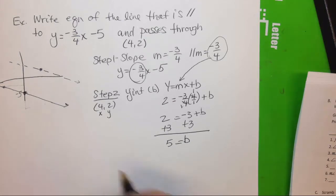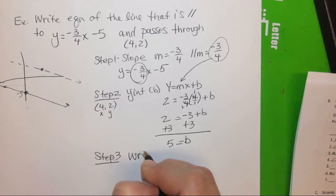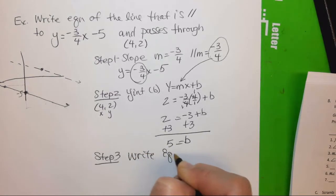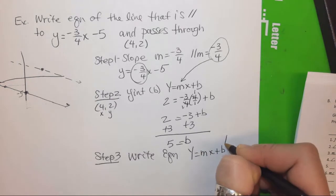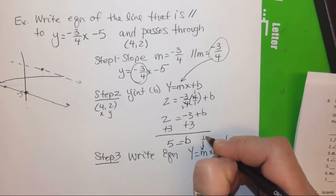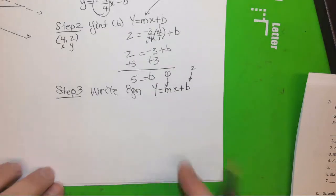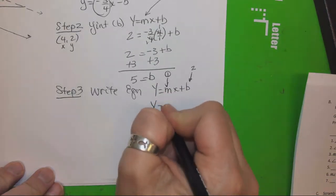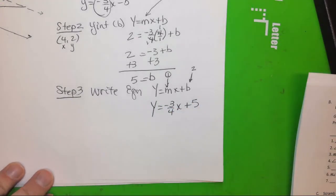What's step three? Right. So now we've got to write the equation. Now, this time, what are we filling in? Filling in b. What else? And the slope. So the slope comes from step one. The b comes from step two. So we'd have y equals negative three-fourths x plus five. So that's how you do a parallel one.